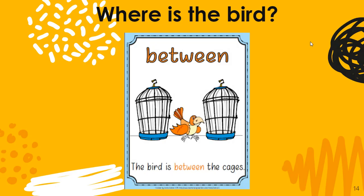Where is the bird? Between. The bird is between the cages. Read that with me: The bird is between the cages. There is a cage on each side of the bird, and that's what makes it between. Another word for between is middle — the bird is in the middle of the cages, or between.